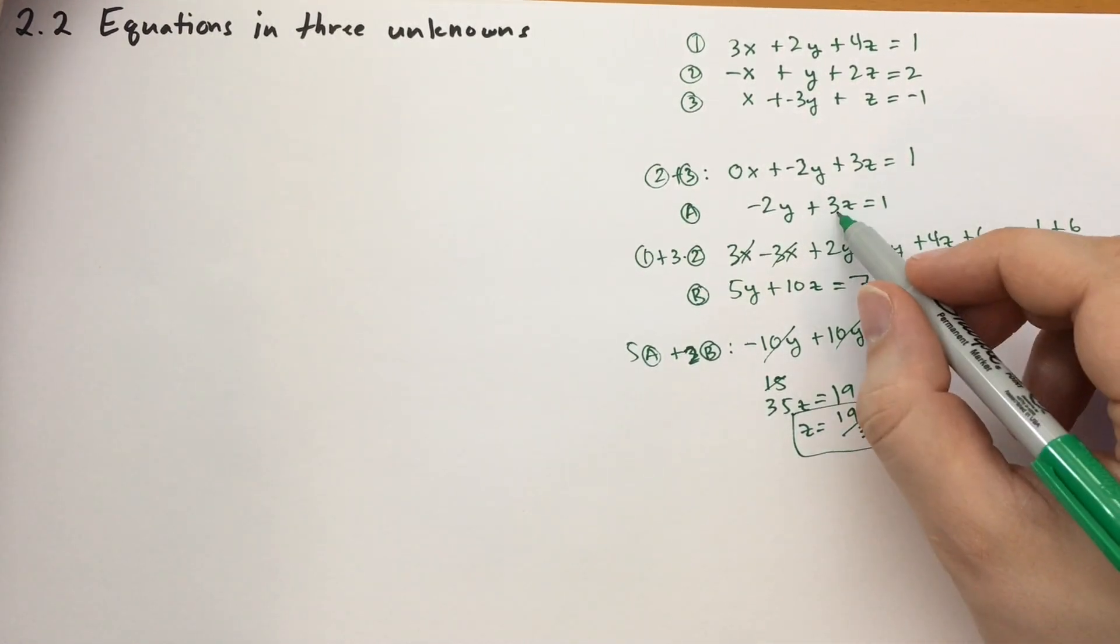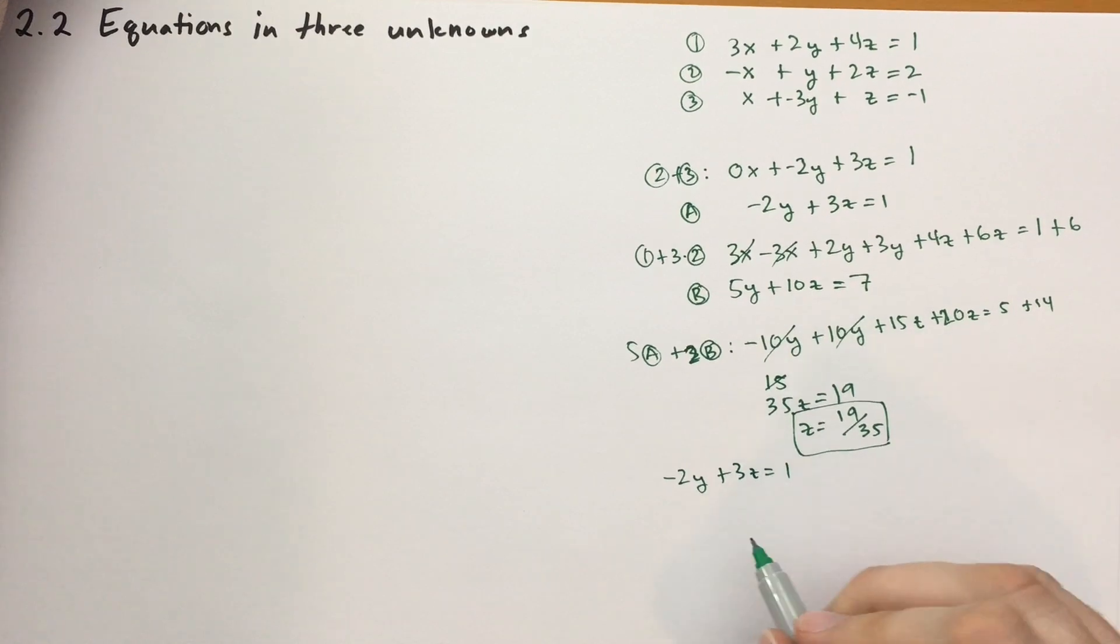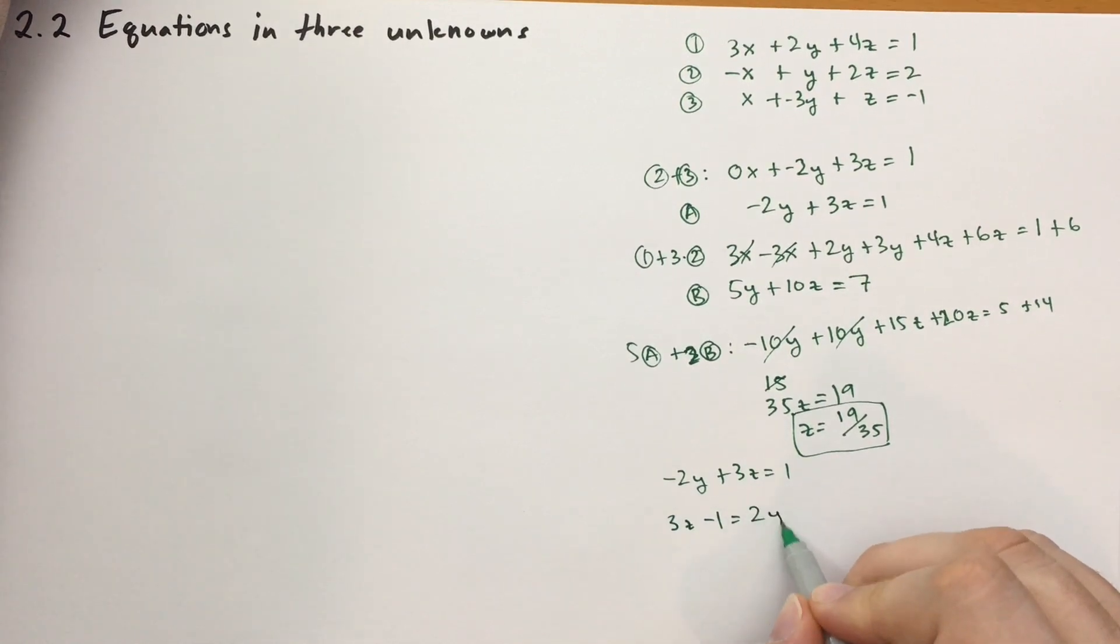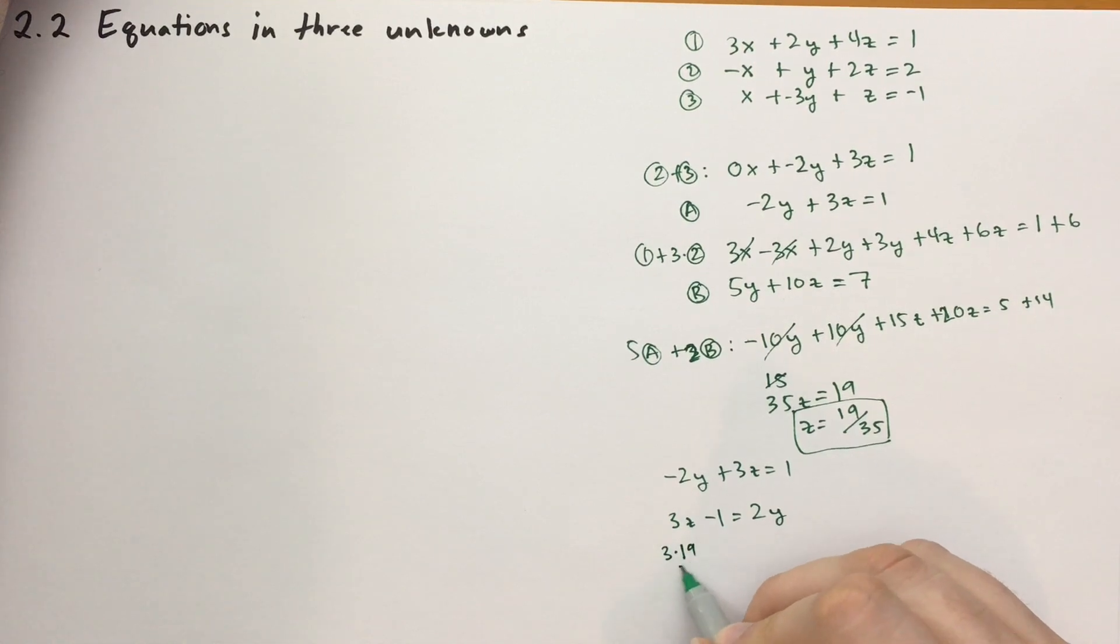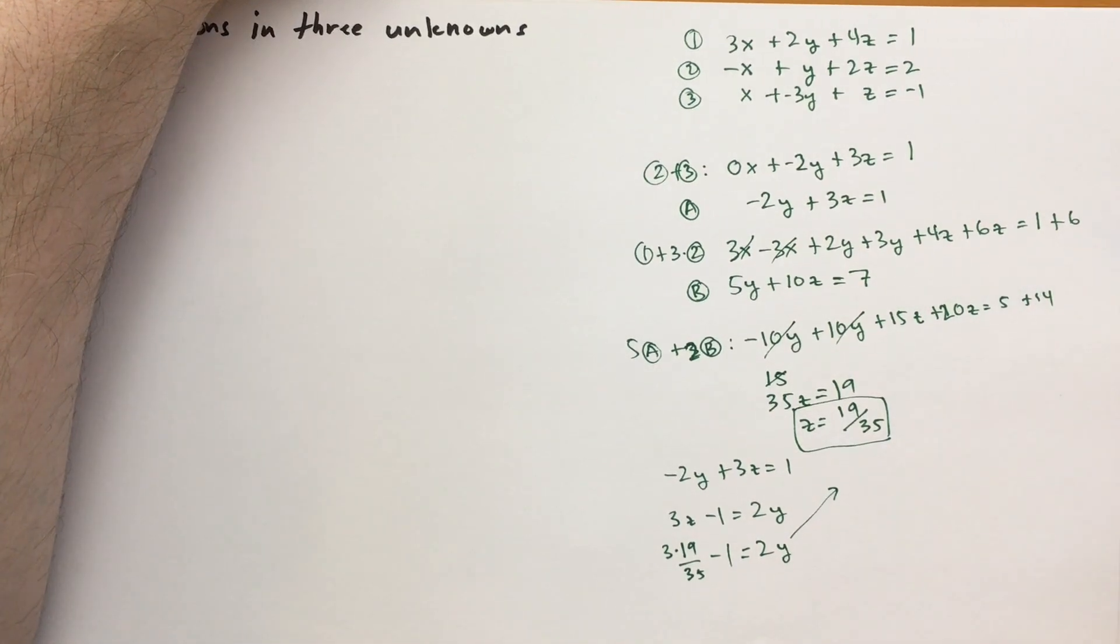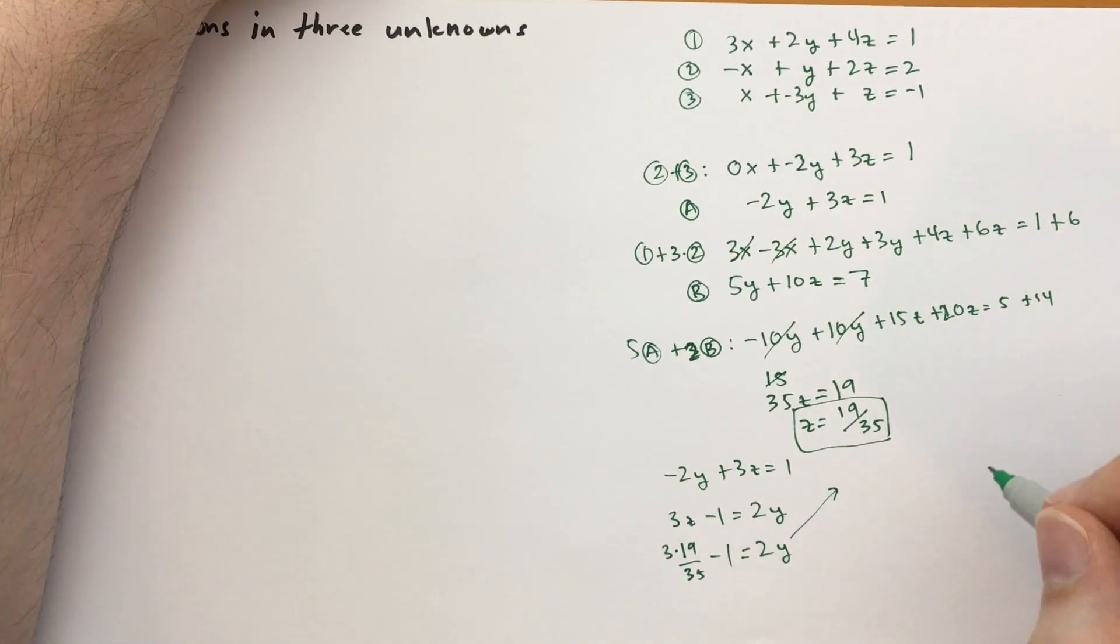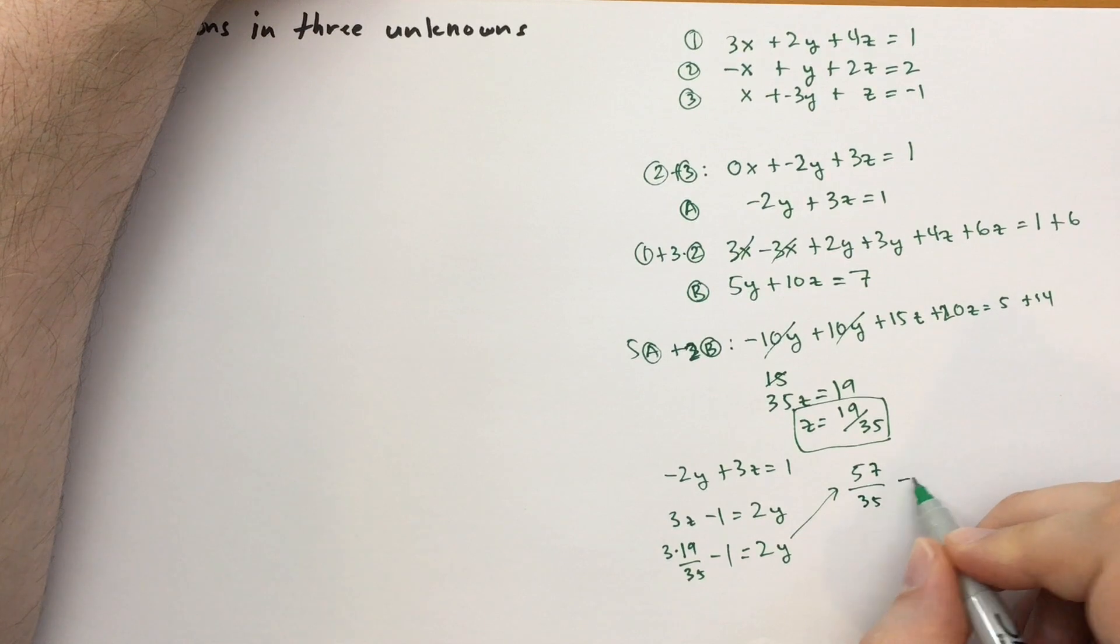All right. So let's put the z up here in this equation. So we get minus 2y plus 3z is equal to 1, or in other words, let's keep the z on this side. Let's move the 1 over, and let's move the 2y over, and let's go ahead and plug it in now. So 3 times 19 over 35. So running out of room, let's go up here. 3 times 19 is, 3 times 20 would be 60, so subtract 3, that would be 57 over 35, minus 35 over 35. That's where the 1 came from. So the 1 became 35 over 35.